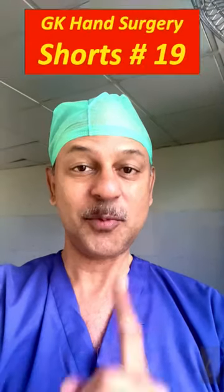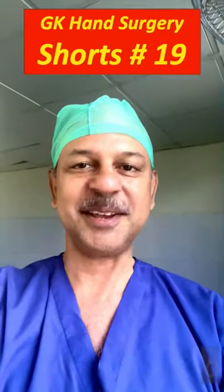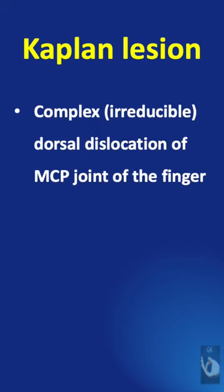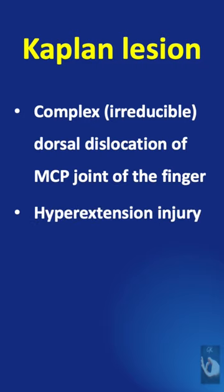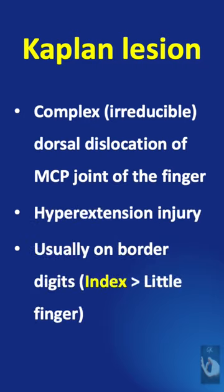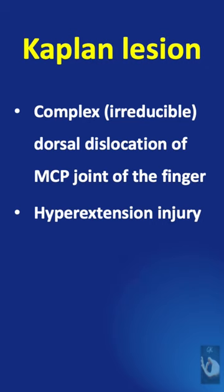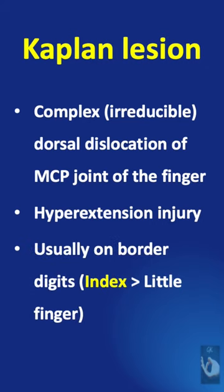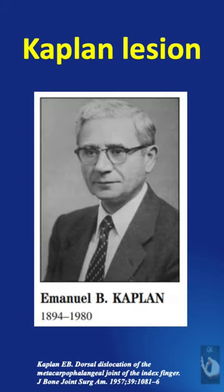Learning hand surgery one point at a time. The Kaplan lesion refers to a complex irreducible dislocation of the metacarpophalangeal joint of the finger caused by a hyperextension injury, usually affecting the index finger as was described by Kaplan.